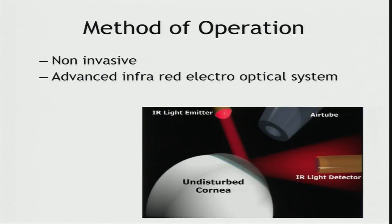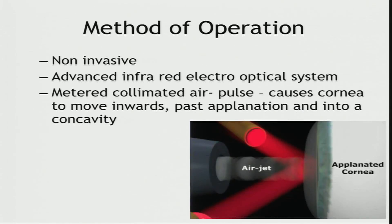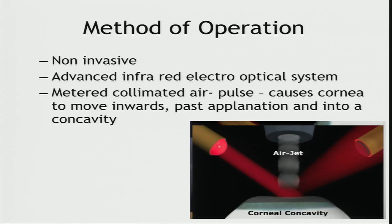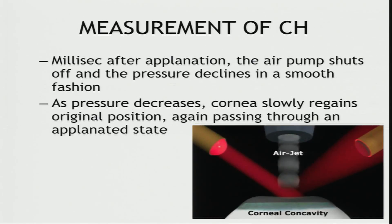This is how it is done. It's a non-invasive process with an advanced infrared electro-optical system. In a normal state, the infrared light which falls on the cornea is not detected by the detector. A metered collimated air pulse causes the cornea to move inwards, which first applanates — that is, it flattens — then passes beyond the point of applanation to produce concavity. At this point of applanation, the infrared light is detected by the detector. After this applanation is produced, the air pump is shut off and the pressure declines in a smooth pattern. As the pressure decreases, the cornea slowly regains its original position, again passing through the applanated state, at which it is again detected.